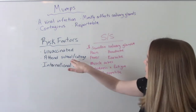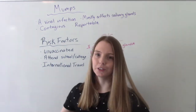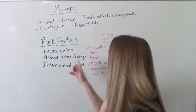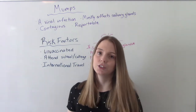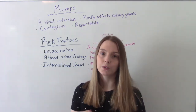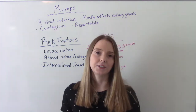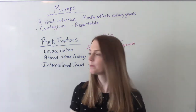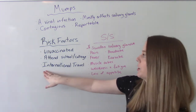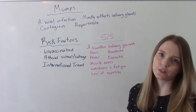Those who are in school — so school-age children who are around other children, around other germs — and people who are in college. So if you live in the dorm, you live in close quarters with other people, you're more likely to get a contagious illness. And then those who travel internationally. Those are the three big risk factors.